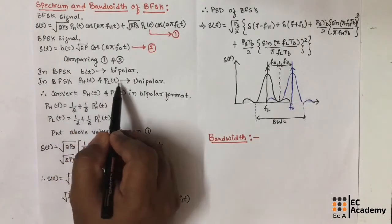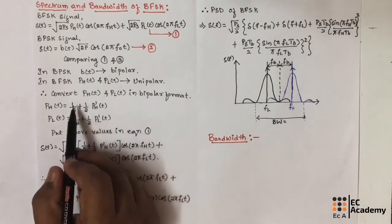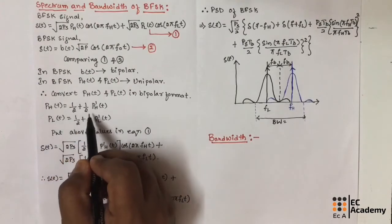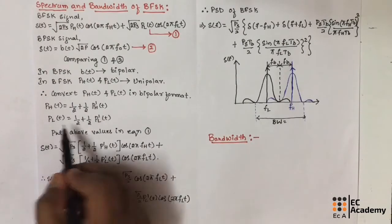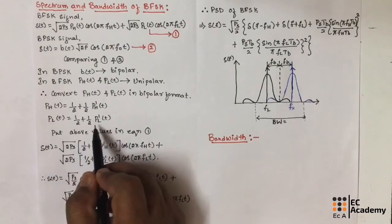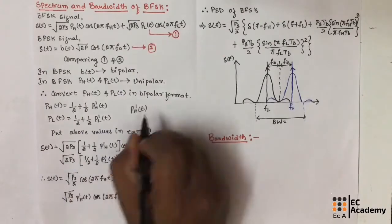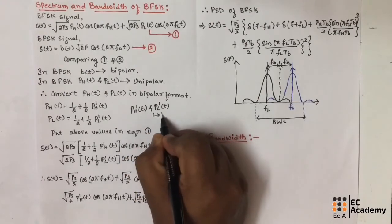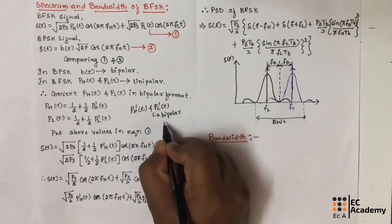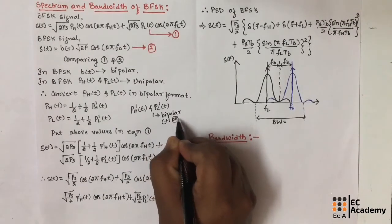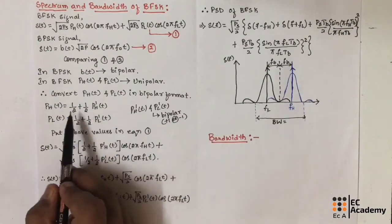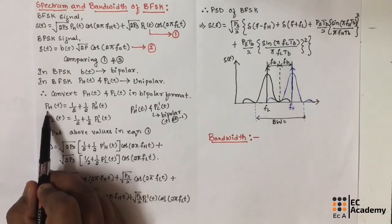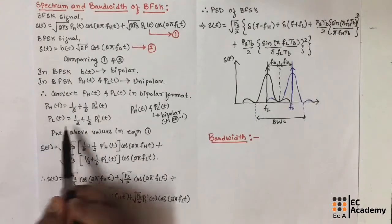Now let us convert this unipolar value into bipolar value. For that, we write ph(t) = 1/2 + (1/2) * ph'(t) and pl(t) = 1/2 + (1/2) * pl'(t). Here, ph'(t) and pl'(t) are both bipolar, meaning they can have the value +1 or -1. Half of a bipolar value plus half gives the unipolar value. Using this analysis, we have written ph(t) and pl(t) in bipolar form.